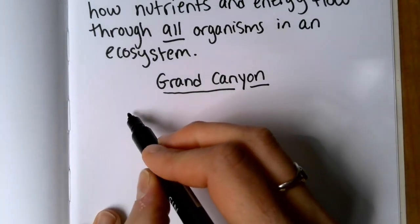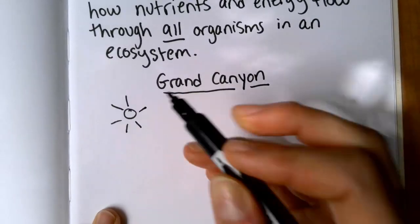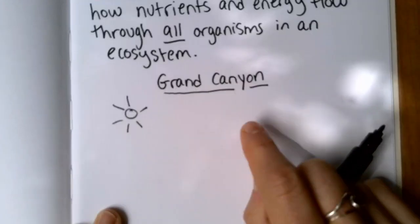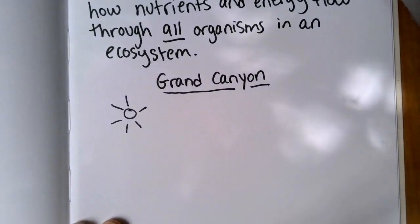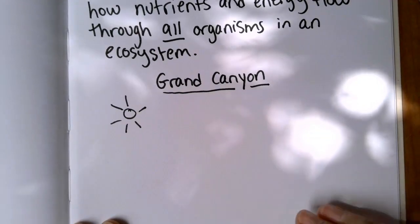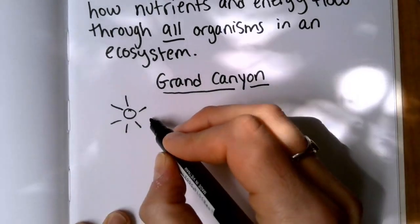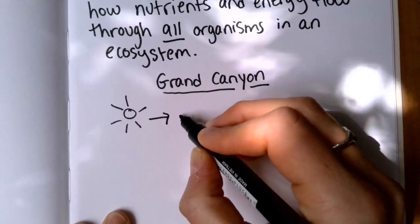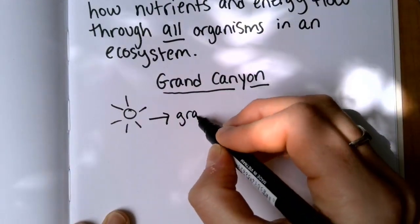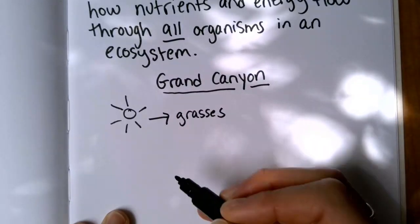In the Grand Canyon, and I'm reading off of the slide, so you can go back and look at the slide as well for part three, how do you draw a food web. It says the producers in the Grand Canyon are grasses and berries. So I'm going to start by drawing an arrow to grasses. And then this is our first difference from a food chain. There's also going to be berries.